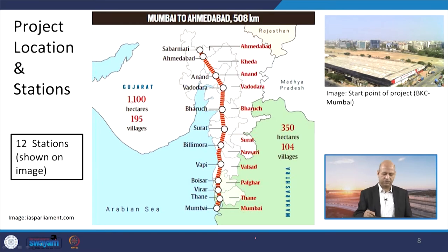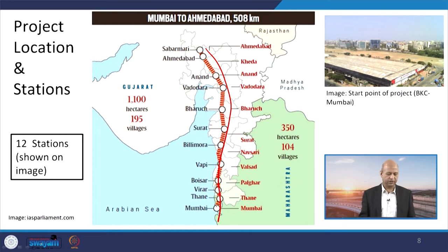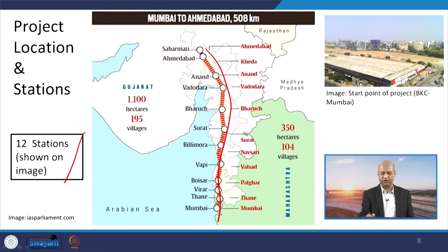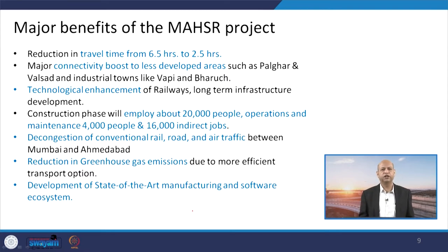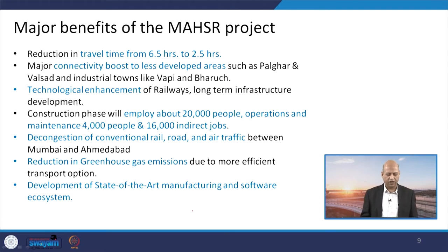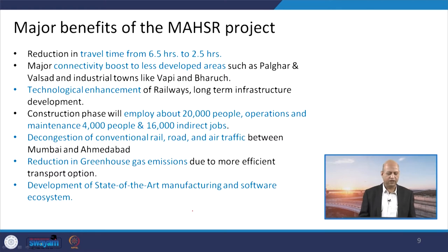The route for this project is 508 kilometres from Mumbai to Ahmedabad, with 12 stations including Sabarmati, Ahmedabad, Anand, Vadodara, Bharuch, Surat, Palghar, Thane, and Mumbai. One major benefit is a significant reduction in travel time — from around 6 hours currently down to around 2 to 2.5 hours. The connectivity will also boost development of underdeveloped areas like Palghar and Valsad, and industrial towns like Vapi and Bharuch.